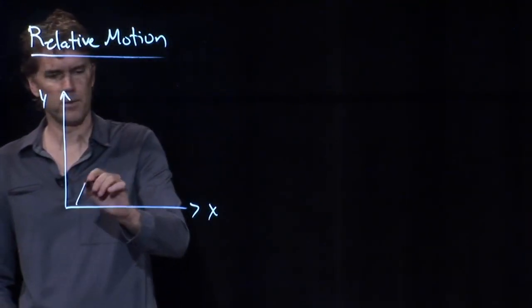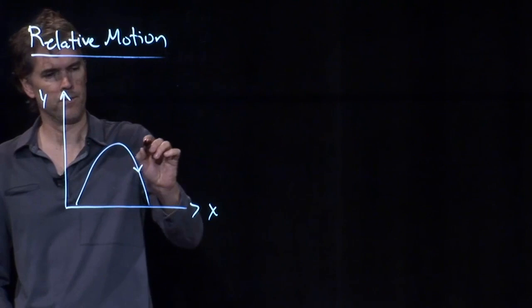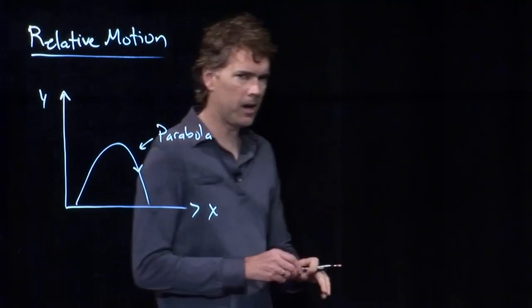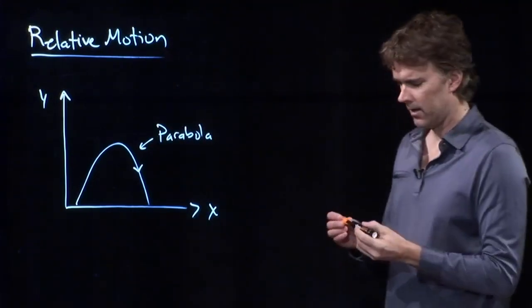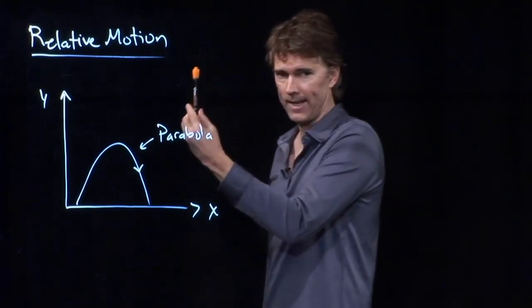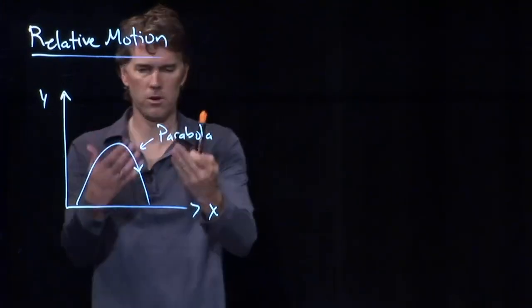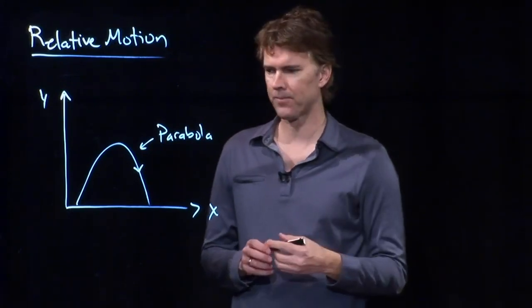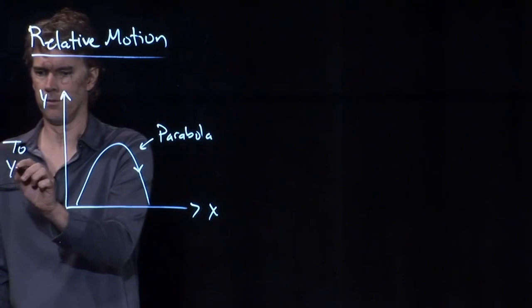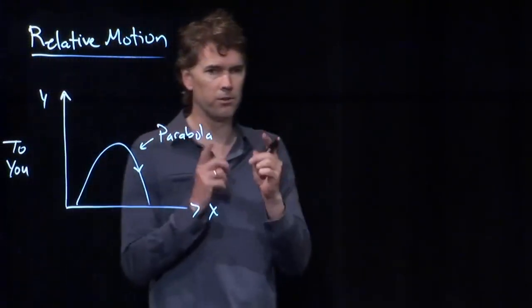So it would look something like that. Like you said, it is a parabola. And once that object leaves my hand, it is of course in freefall. The only thing acting on it is gravity and we know that projectile motion maps out a parabola. But this is what you observed. This is what it looks like to you.